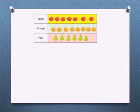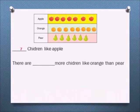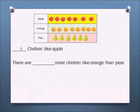Now, some questions related to the pictogram. How many children like apple? There are seven children like apple. How many more children like orange than pear? There are eight children like orange and six children like pear, so